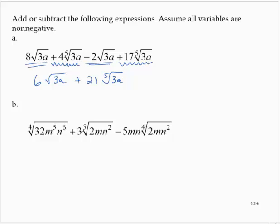Part b: the fourth root of 32m to the fifth n to the sixth, plus 3 times the fifth root of 2mn squared, minus 5mn times the fourth root of 2mn squared. This is messy, but I don't see any like radicals right away — however, I can simplify this first radical.